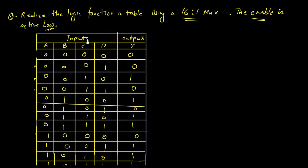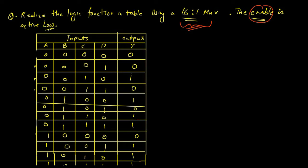The next question is how to realize a logic function given by a table using a 16-to-1 multiplexer, with the enable input set to low. A 16-to-1 multiplexer means 16 inputs and one output. Since there are 16 inputs, there are four select lines, labeled A, B, C and D.